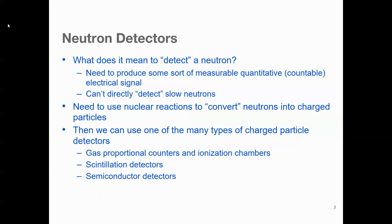First of all, what does it mean to detect a neutron or how do we detect a neutron? Since we know that a neutron is a chargeless quantity, we need to produce some sort of measurable or countable electronic signal to further process the information. For this, we need to use nuclear reactions to convert neutrons into charged particles, and then we can use one of the many types of charged particle detectors that we know from gamma radiation detection systems like gas counters, scintillation detectors, and semiconductor detectors.